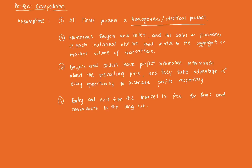The second assumption is that there are many, many buyers and sellers. The sales or purchases of each individual unit are very small relative to the aggregate or market volume of transactions. If a consumer opts to decrease or increase their demand, it wouldn't really affect the entire market demand, because the value of one individual consumer is very small relative to the whole market. Similarly, the decision of one seller out of thousands will not heavily sway the entire market.